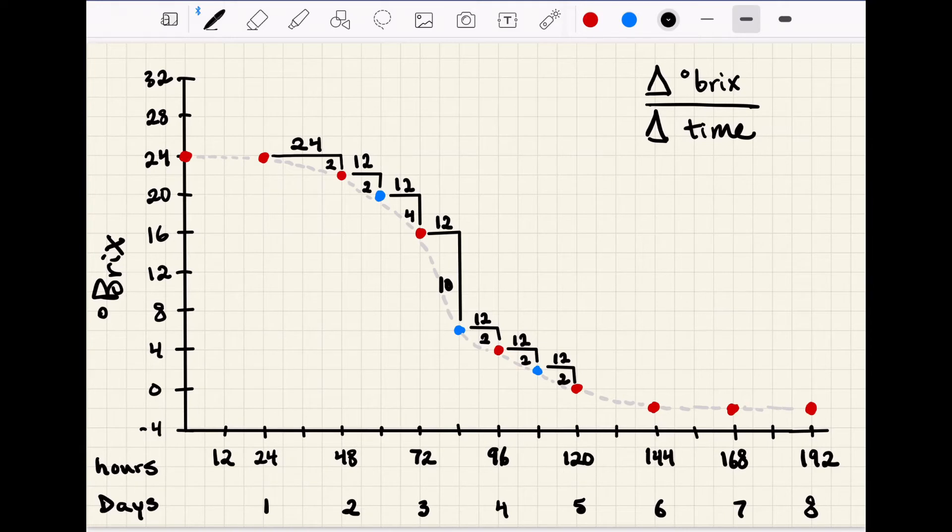So again, depending on which segment we choose, we have different slopes and we can calculate our rate as something like two bricks over 24 hours or something like 10 bricks over 12 hours.